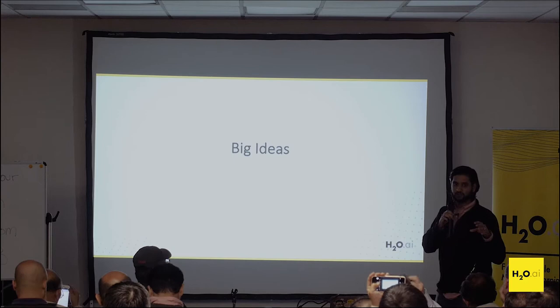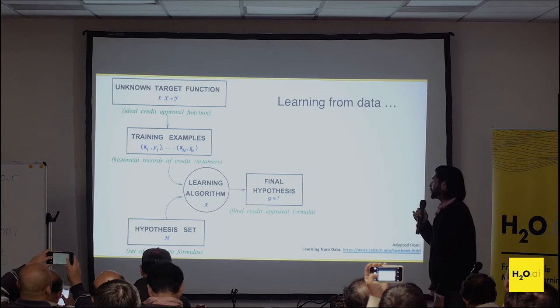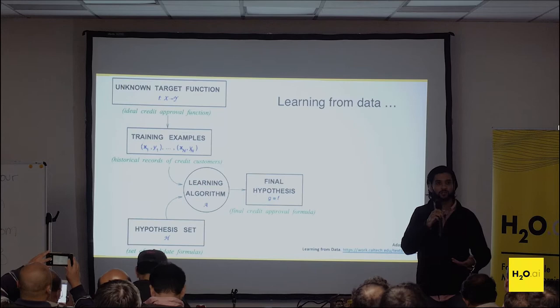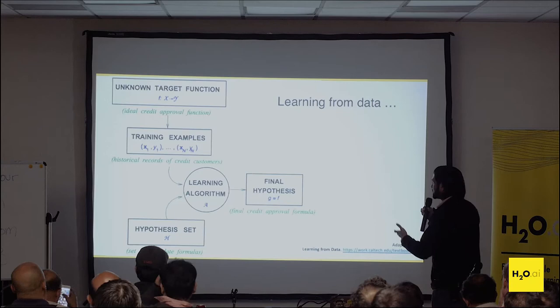Let's talk about some of the big ideas that we get from machine learning — what's the big picture we're trying to achieve and how do we normally achieve this? Usually we have some unknown target function. Think of approving someone for credit, predicting fraud, churn, anything like that. We really don't know what that target function is, which is why we turn to machine learning or linear type models.